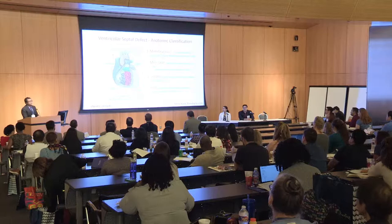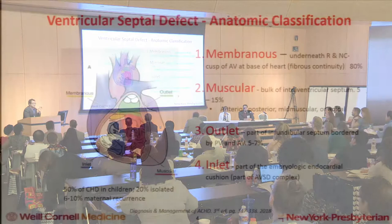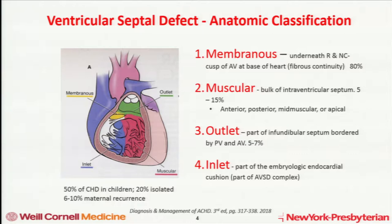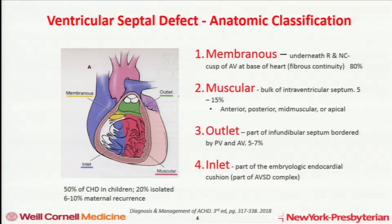When talking anatomically about ventricular septal defects, we delineate the ventricular septum into four bases. The first is the membranous septum, which exists right below the right and non-coronary cusp of the aortic valve at the base of the heart — the most common type of VSD, about 80%. This is followed by muscular VSDs, which make up the majority of the trabecular septum. We describe the VSD location as anterior, posterior, mid-muscular, or apical. The outlet septum is part of the infundibulum near the membranous region where the aortic and pulmonary valves meet. Understanding this anatomy is critical because complications differ based on anatomic location.